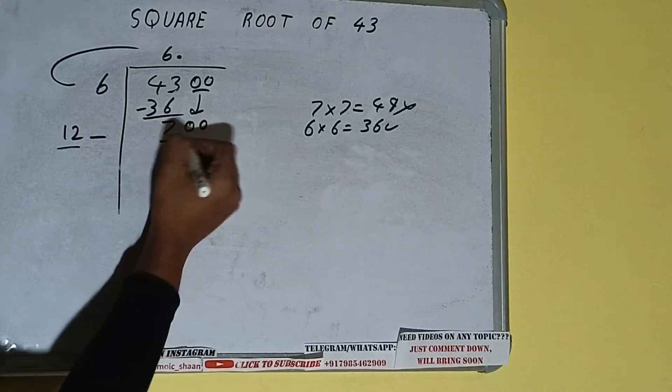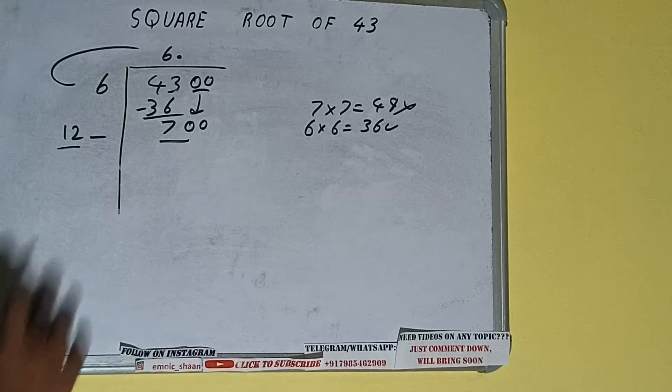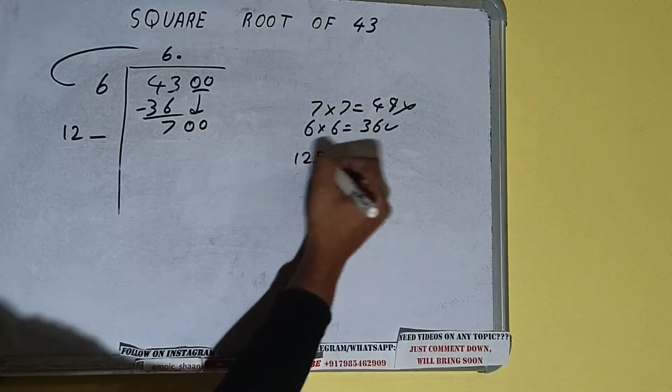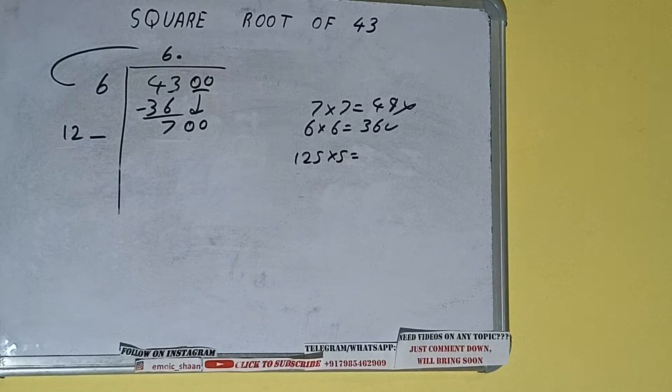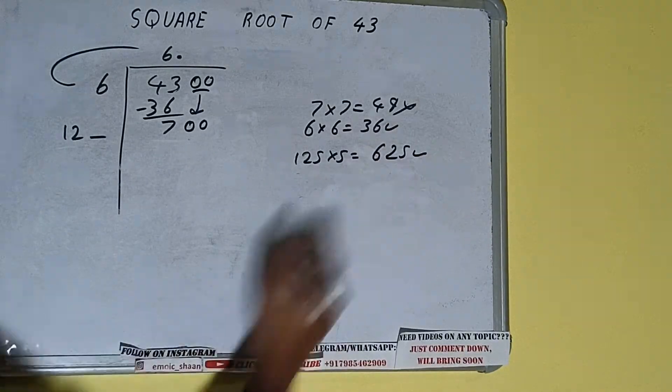So we can compare this 12 and 70. 12 times 5 is 60, right? So we can try 5. 125 into 5 we can try and we'll be having 625, which is good to take.